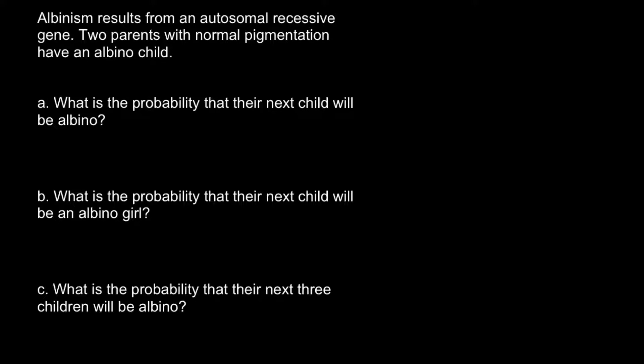So here is the problem. Albinism results from an autosomal recessive gene. Two parents with normal pigmentation have an albino child. Question A: What is the probability that their next child will be albino?